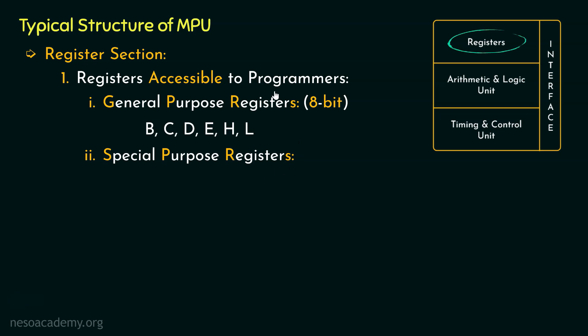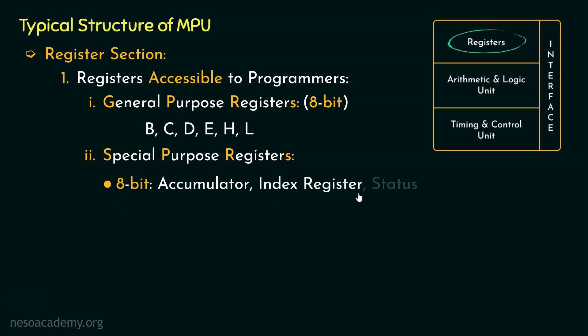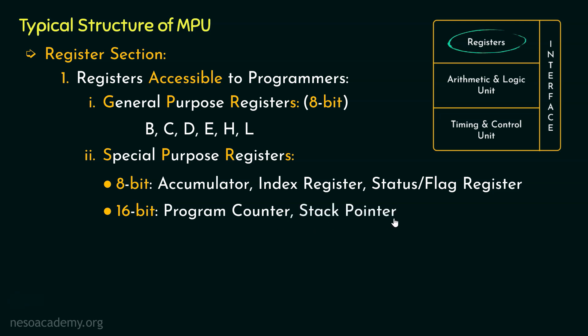Now comes the next type, that is SPRs or Special Purpose Registers. These registers are also accessible to the programmers and we have two different categories. First, the 8-bit registers which comprise the Accumulator, Index Register, and Status or Flag Register. Apart from these, we also have some 16-bit special purpose registers — the Program Counter and Stack Pointer. These are 16-bits because they store addresses, and in the case of the 8085 microprocessor we have 16 bits to address different memory locations. Also, considering the IO/M bar pin, we can communicate with the input-output ports.